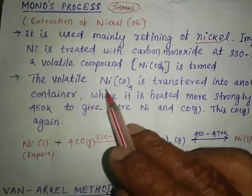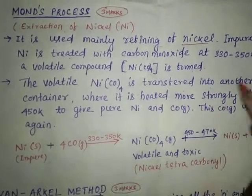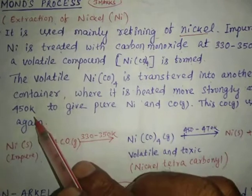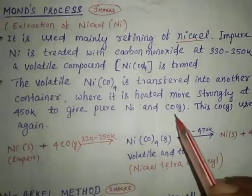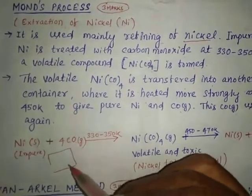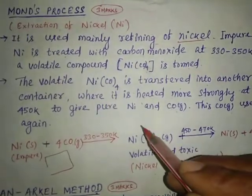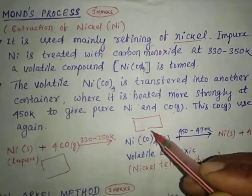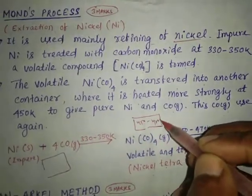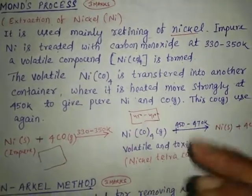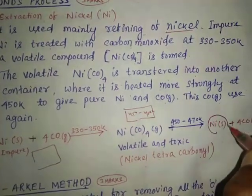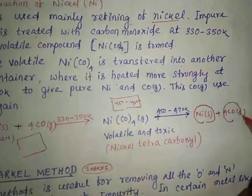The volatile Ni(CO)₄ is transferred into another container where it is heated more strongly at 450 to 470 Kelvin to give pure nickel and carbon monoxide. The first container produces the volatile and toxic nickel tetracarbonyl, and that compound is then dissociated at 450 to 470 Kelvin to yield solid nickel and carbon monoxide.